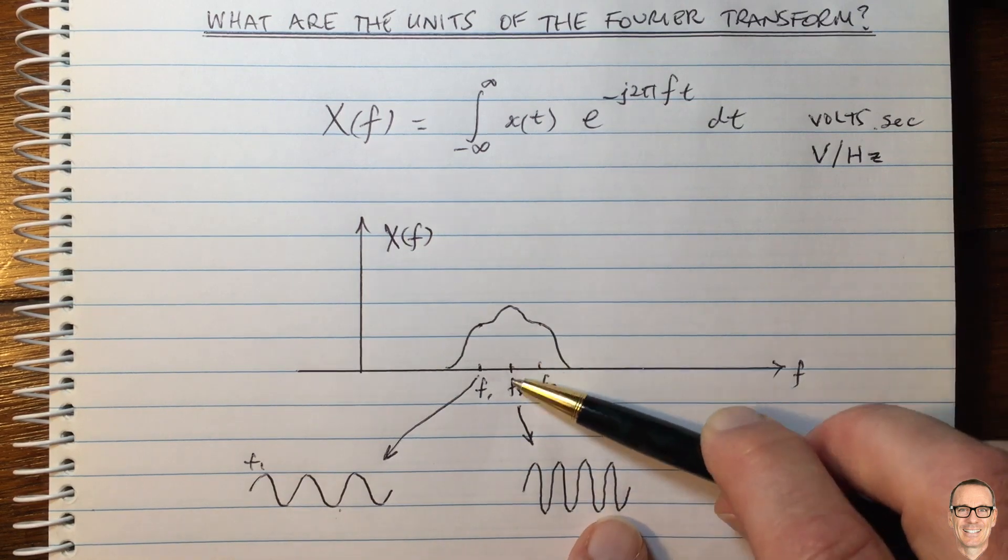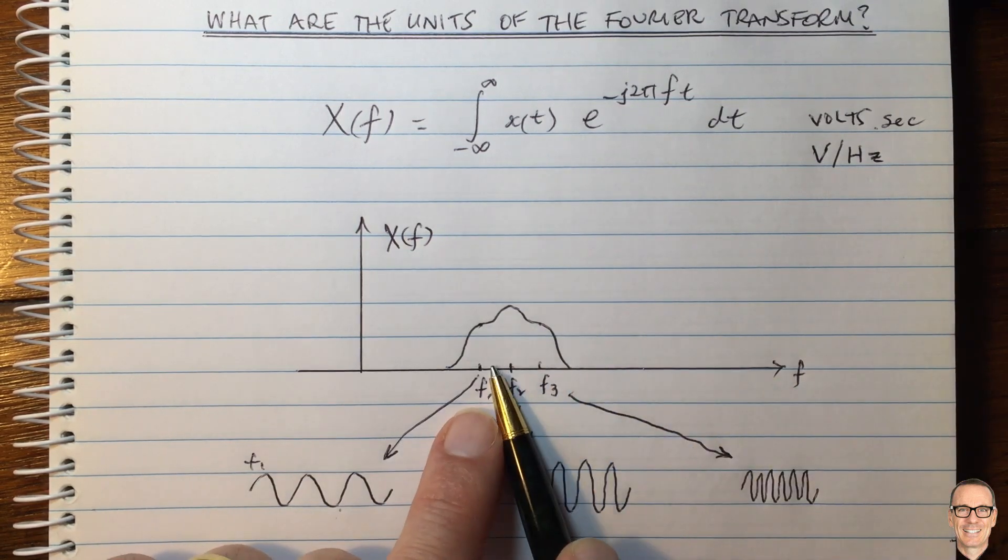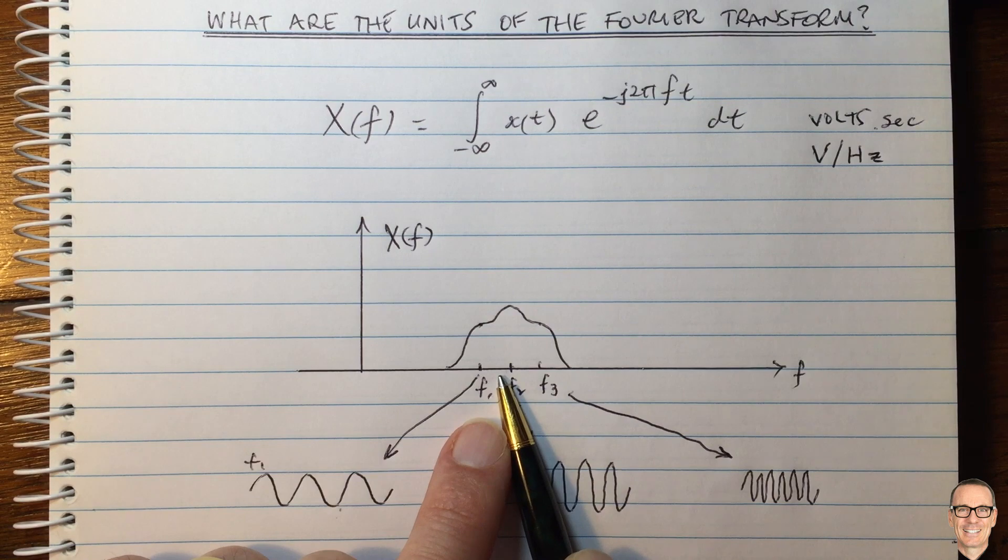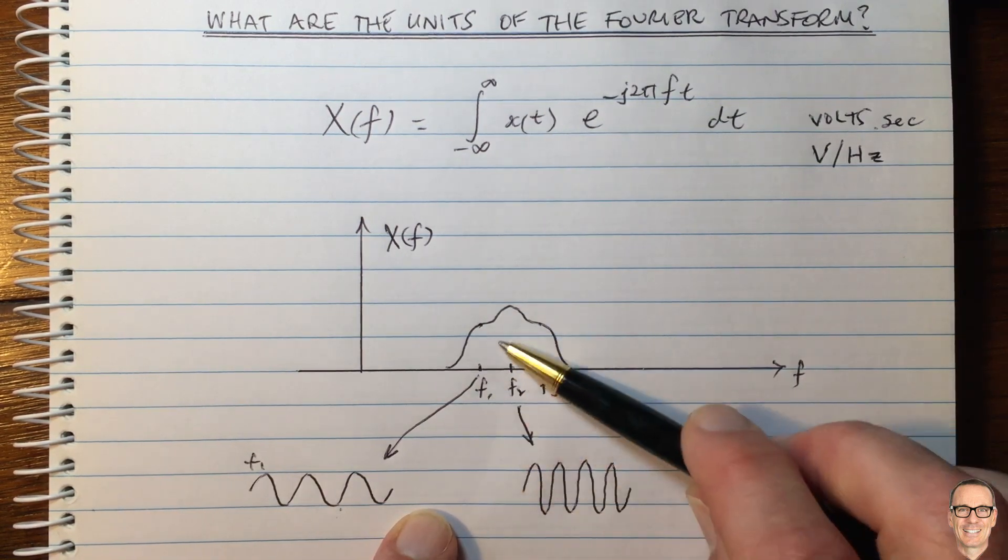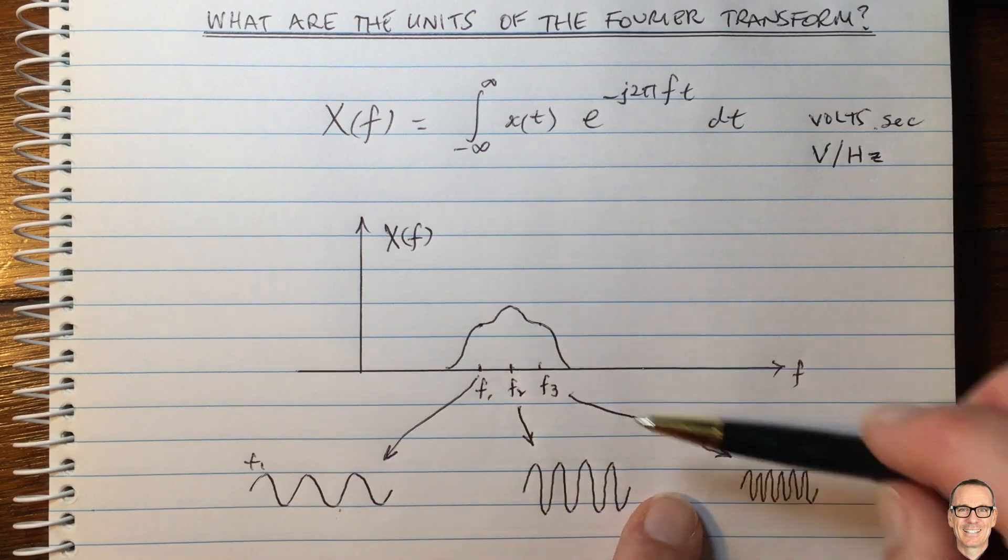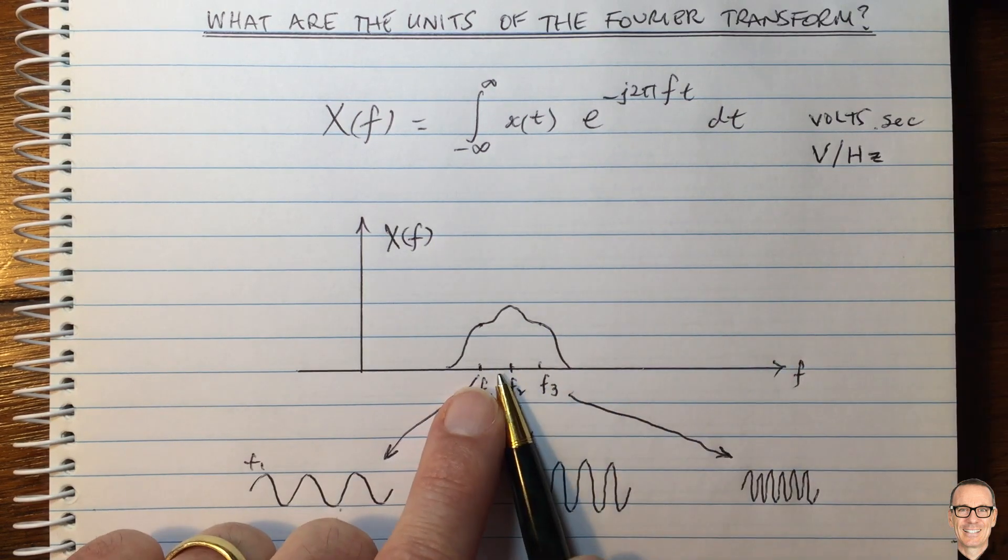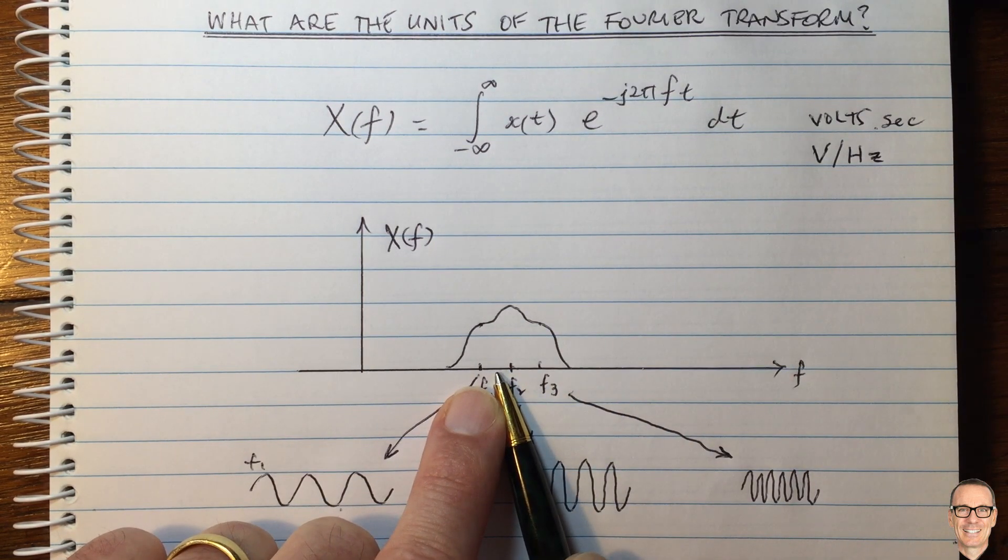And there's infinite resolution in the frequency domain. So I could draw some waveforms between F1 and F2 and give them an amplitude, and between F2 and F3, but then I could keep doing that infinitely with infinite resolution. And if I gave them all an amplitude, and if it was the volts, then I'd be adding each time more and more voltage for every extra degree of resolution that I go to.